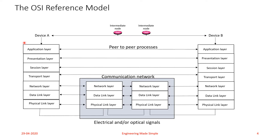The OSI reference model has seven layers: namely, Application layer, Presentation layer, Session layer, Transport layer, Network layer, Data Link layer, and Physical layer.